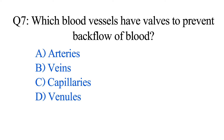Question number seven. Which blood vessels have valves to prevent backflow of blood? Option A: Arteries. B: Veins. C: Capillaries. D: Venules. The correct option is Option B: Veins.